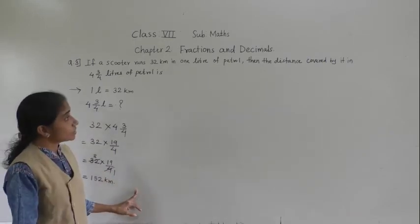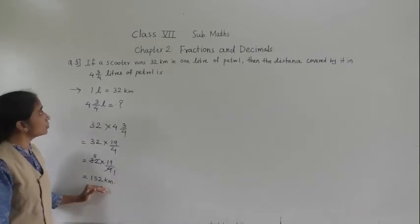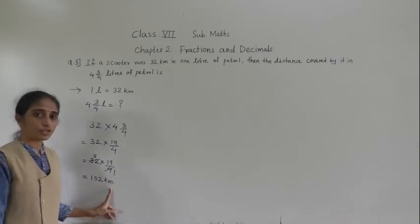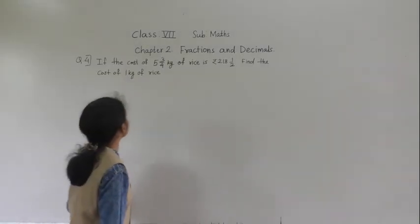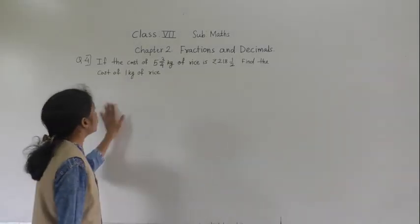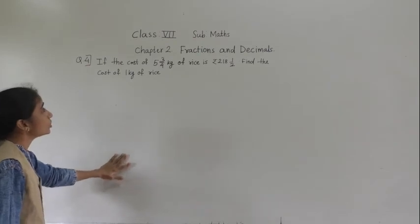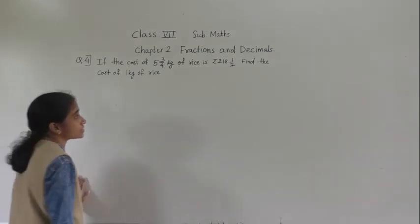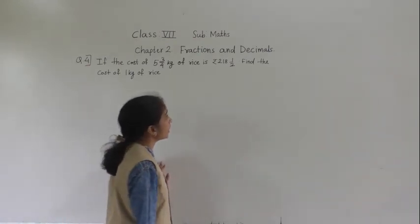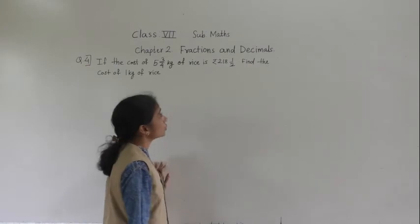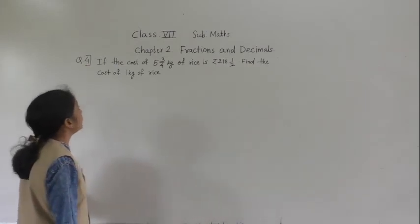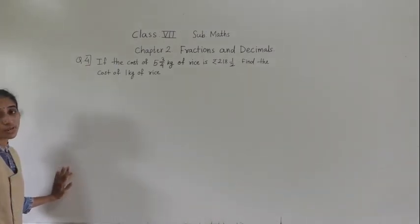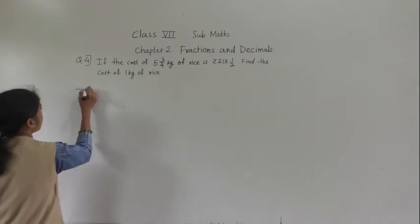Distance covered by the scooter is 152 kilometers. Next example: if the cost of 5 integer 3 upon 4 kg of rice is Rs. 218 integer 1 upon 2, find the cost of 1 kg of rice.